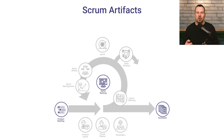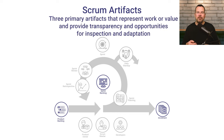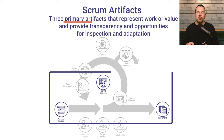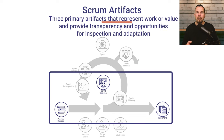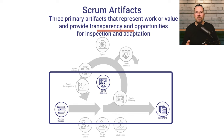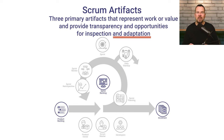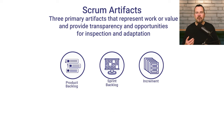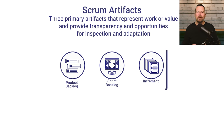The last group of Scrum elements are Scrum artifacts. In Scrum, there are three primary artifacts that represent work or value and provide transparency and opportunities for inspection and adaptation. These artifacts are the product backlog, sprint backlog, and increment.